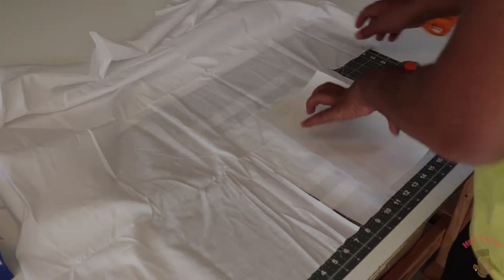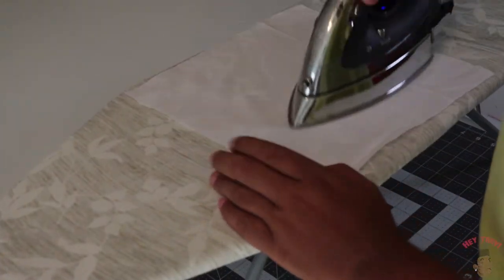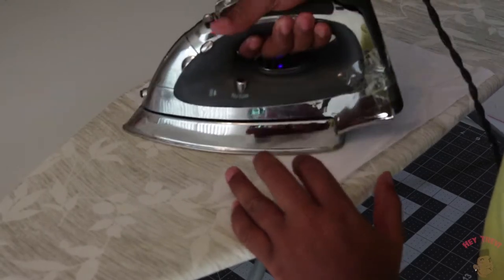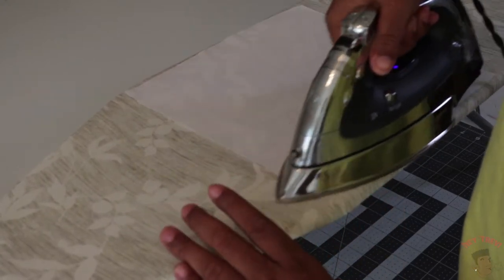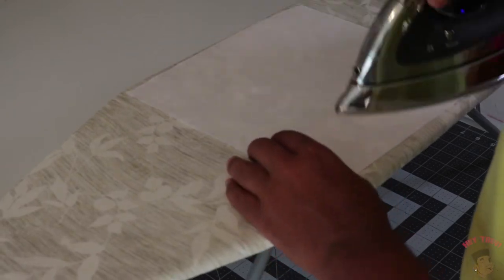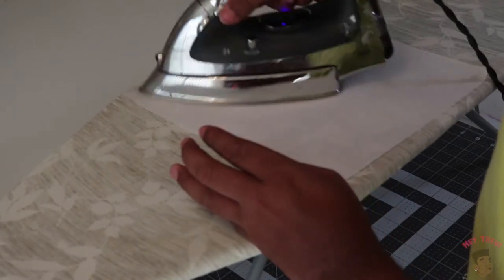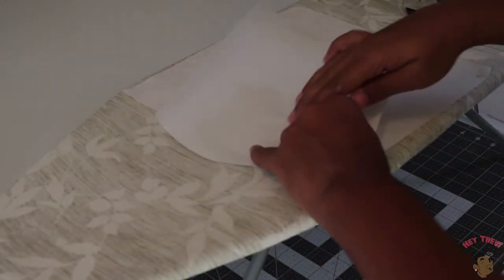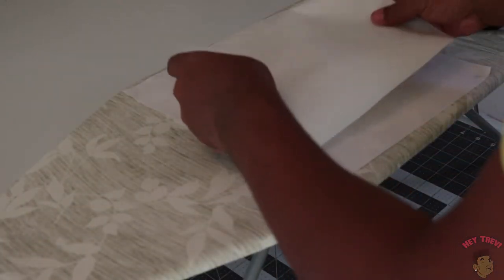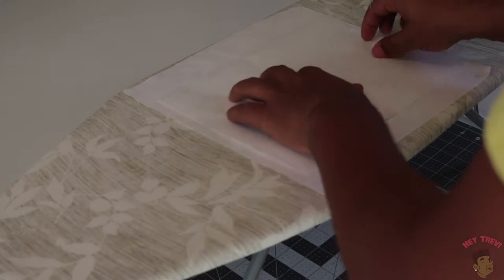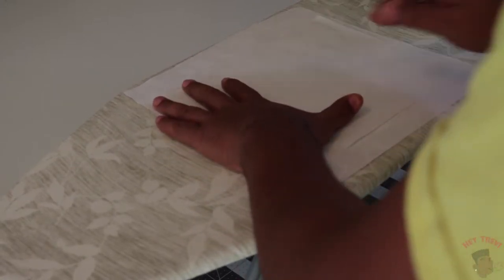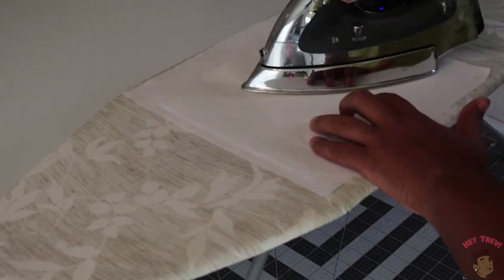Before I iron on the parchment paper, I'm just going to iron out all those wrinkles. Make sure you know what's the wrong and right side of your fabric. For this fabric, there was no wrong or right side because generally with light cotton there's not really a wrong or right side. But if yours does have a wrong side, you're going to put that shiny side towards the wrong side and iron it on. When you iron, just make sure everything is even and flat.